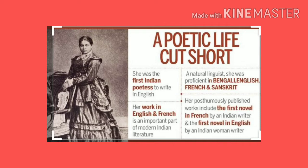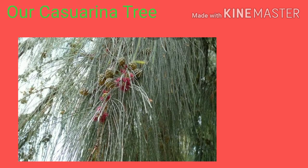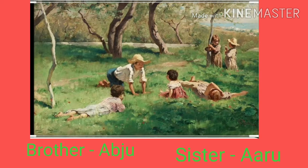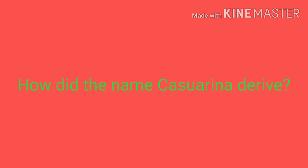The poem Our Casuarina Tree is an autobiographical poem. The poet recollects her pleasant childhood days with her brother Abju and her sister Aru, and the beautiful memories like how they played under the Casuarina tree. Let's see how the name Casuarina is derived.